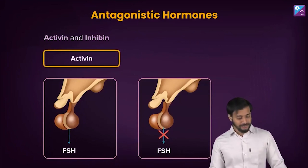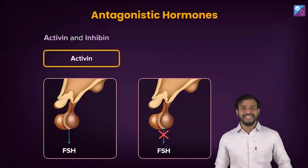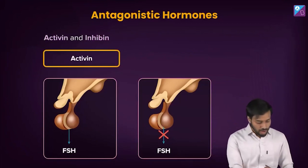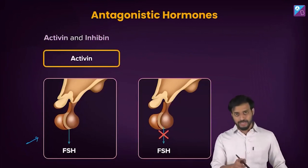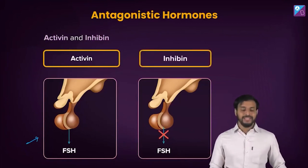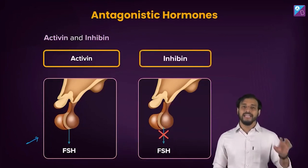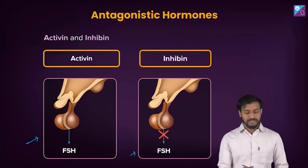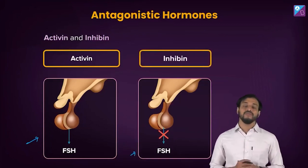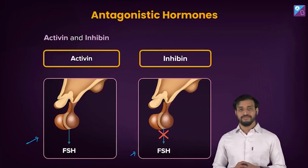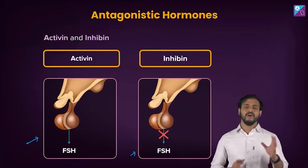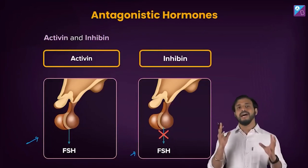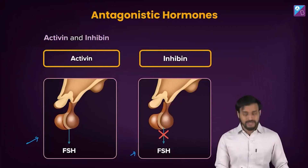Next: activin and inhibin. Activin helps in the production of FSH — follicle stimulating hormone — whereas inhibin inhibits the production of follicle stimulating hormone. We have already studied this. I hope you have related all of these so far.